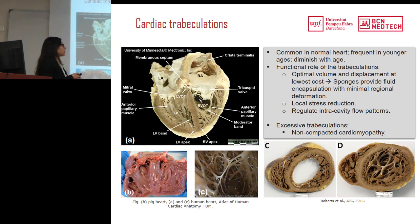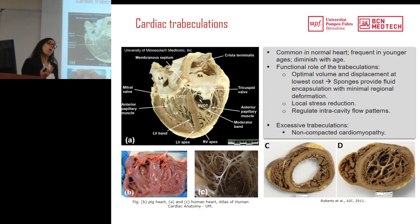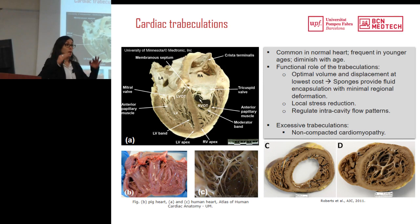There is a lot of discussion about the role of trabeculations in cardiac function. One proposed function is to optimize volume and displacement at lowest cost — this sponge-like structure provides fluid encapsulation with minimal radial deformation, leading to a reduction of local stress and regulation of intracavity flow patterns. In humans, trabeculations are common in normal hearts, more frequent in younger ages and diminishing with age. The role of trabeculations in cardiac function is still not well known, and most computational models don't take them into account, modeling the left ventricle as a smooth surface.